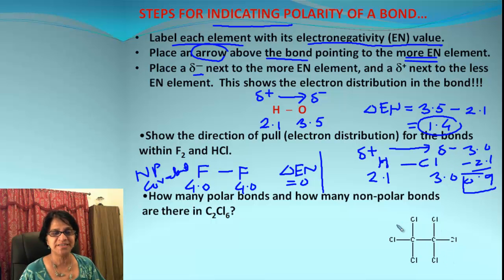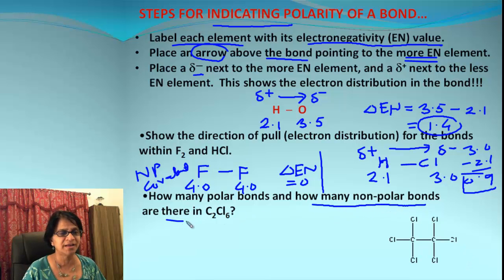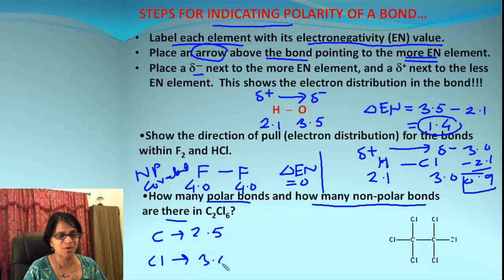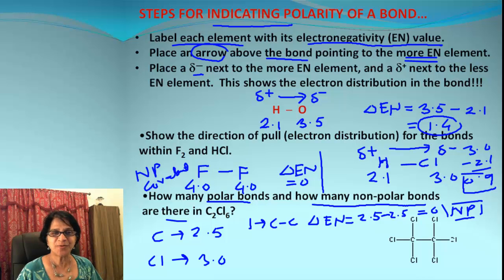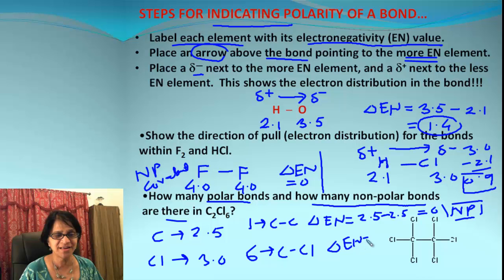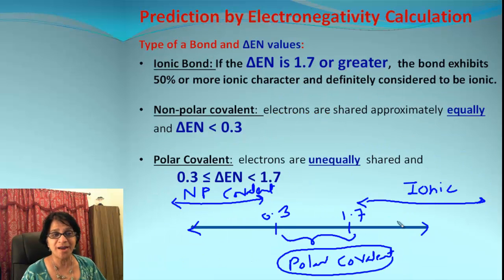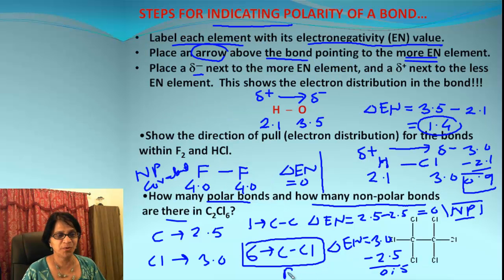Now here's the compound C2Cl6. We need to find how many non-polar bonds and how many polar bonds there are. The electronegativity value for carbon is 2.5 and for chlorine it is 3.0. There is one bond between carbon and carbon: delta En is 2.5 minus 2.5, which equals zero — that is a non-polar covalent bond. There are 6 bonds between carbon and chlorine: delta En is 3.0 minus 2.5, which equals 0.5. Since 0.5 is between 0.3 and 1.7, all six of those bonds are polar covalent bonds.